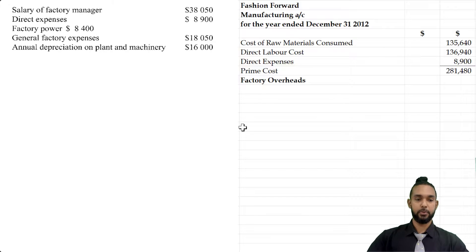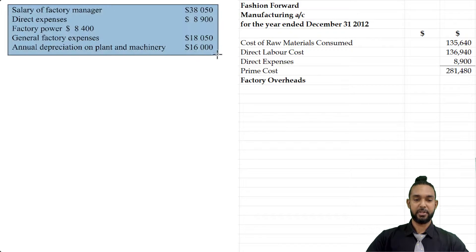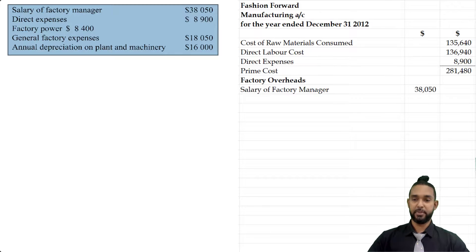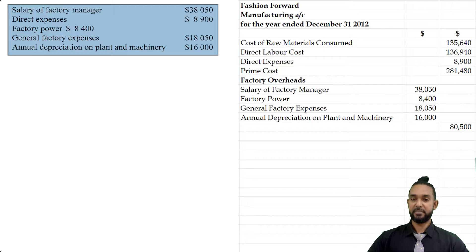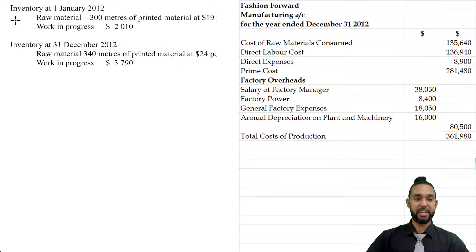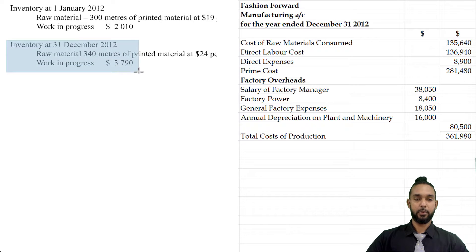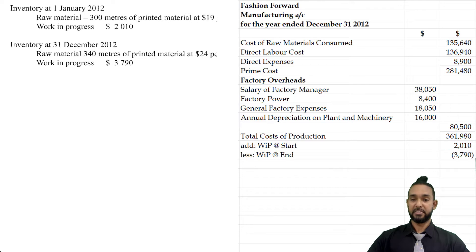Now we have the overheads, which include everything else in this section other than the direct expenses: salary of the factory manager $38,050, factory power $8,400, general factory expenses $18,050, and annual depreciation on plant and machinery $16,000. That gives us total overheads of $80,500, which when added to prime cost gives us total cost of production of $361,980. We then add opening work in progress of $2,010 and subtract closing work in progress of $3,790 to arrive at the cost of goods manufactured.